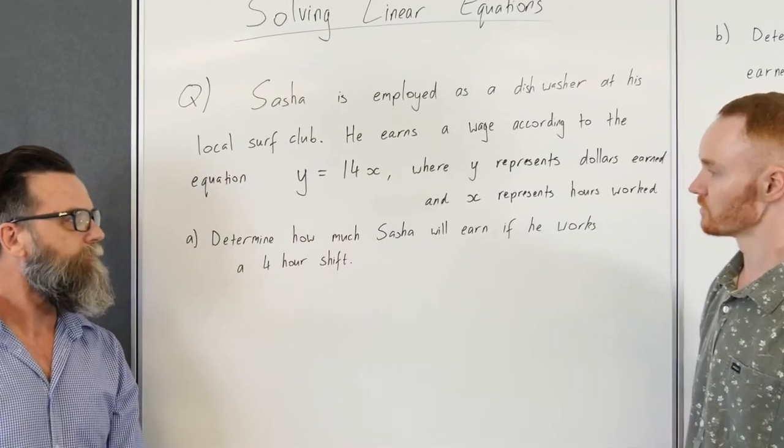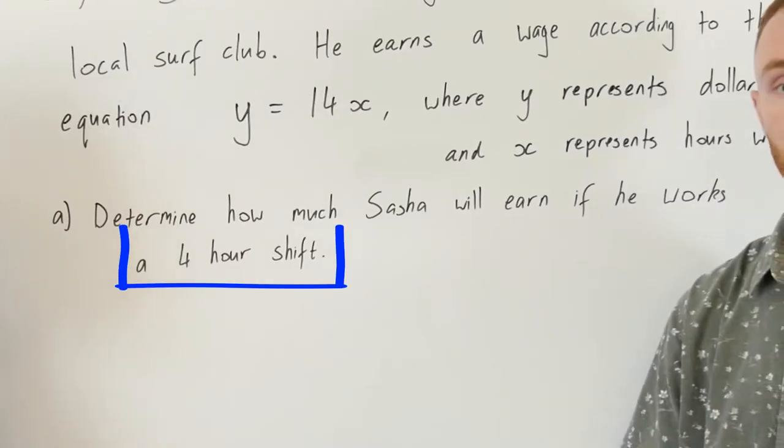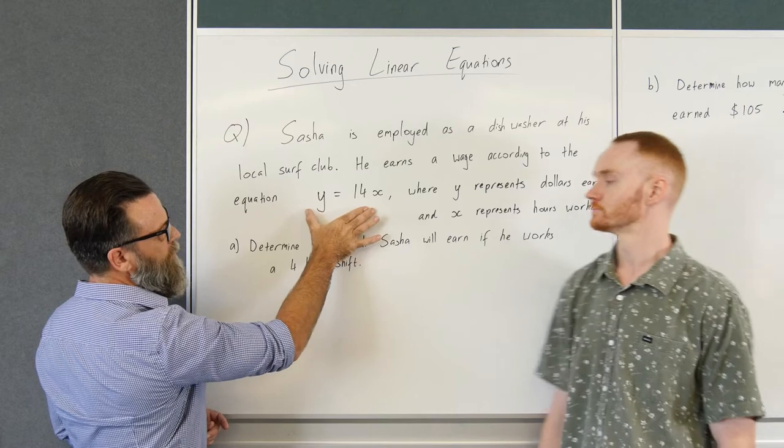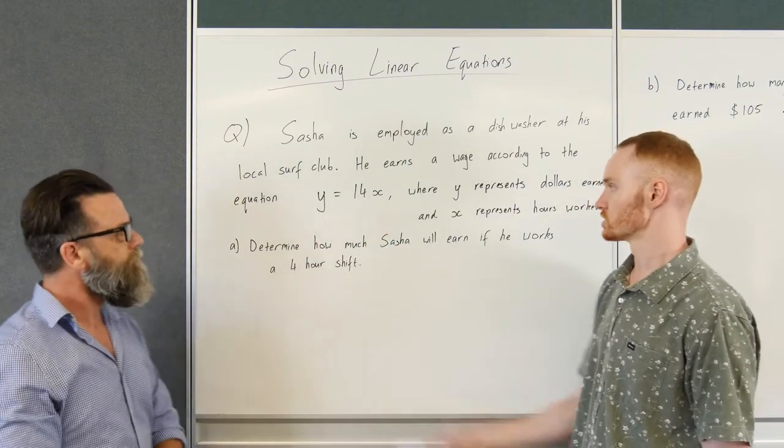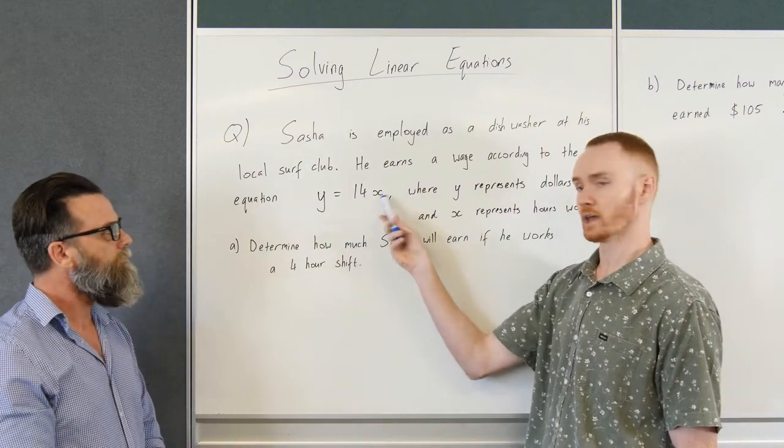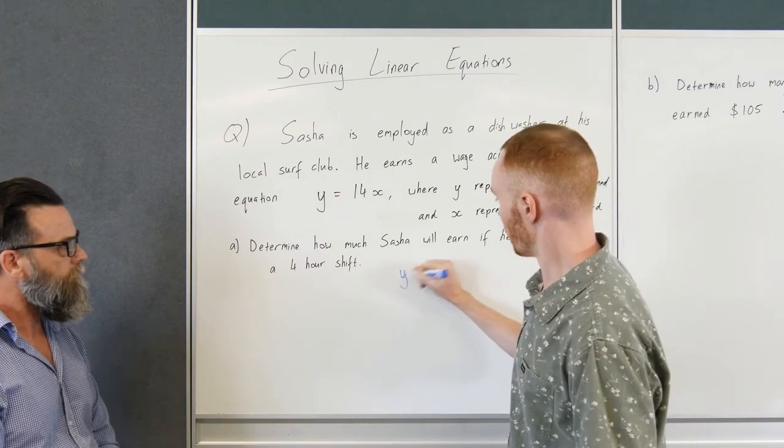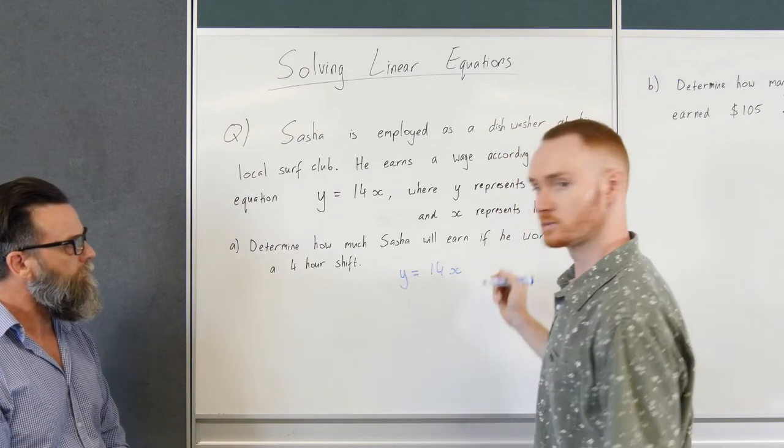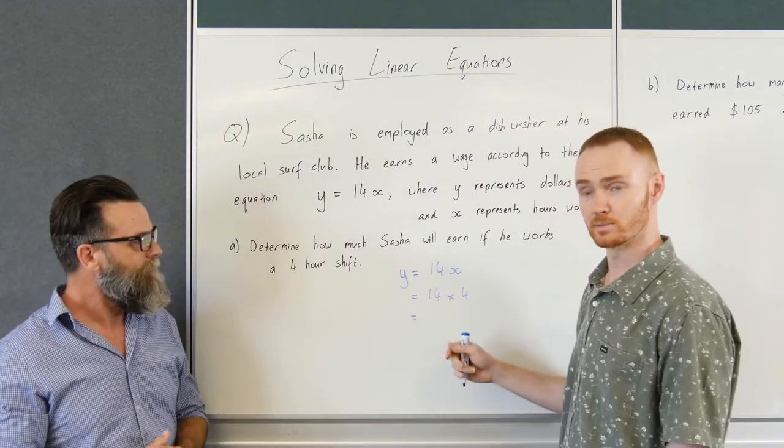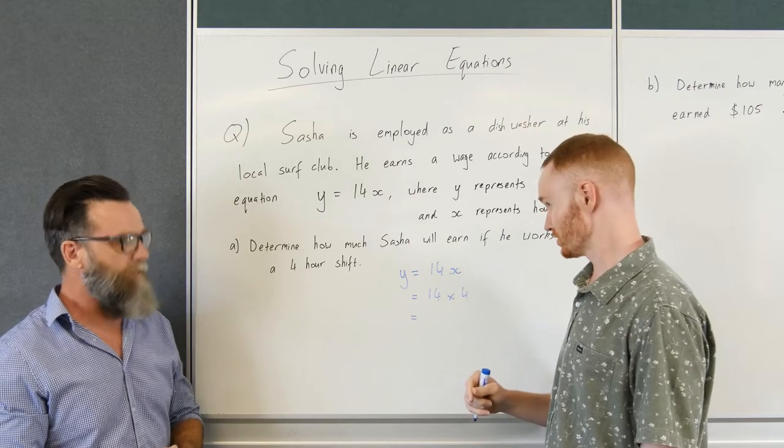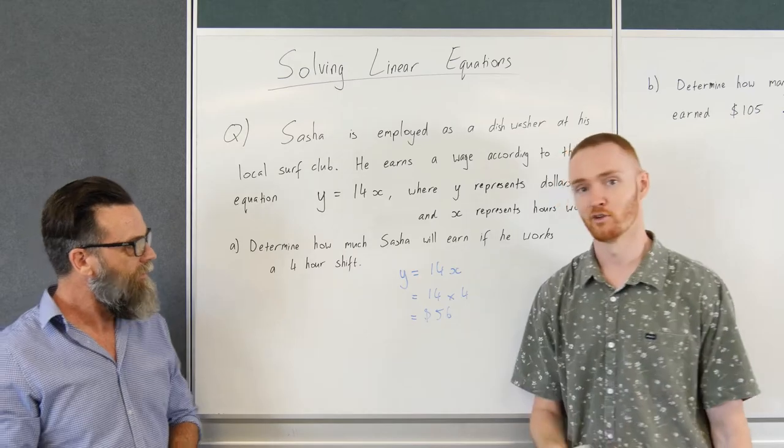Now the first part of the question we have to determine how much Sasha will earn if he works a four hour shift. So we'd have to be going back and having a look at this equation and using that equation to work this out. Exactly. So we're trying to solve for y given that we know that x is going to be four. So we'd write out the original equation y equals 14x and then substitute in our four hours. So 14 times four would be $56. Yes, it would definitely be $56. Not bad for four hours of work.